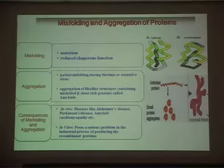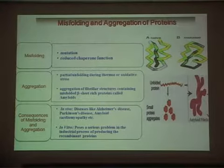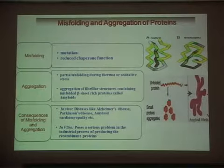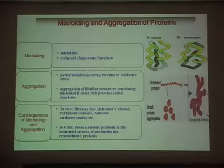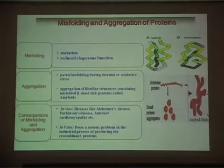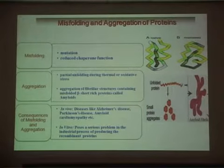The consequences of misfolding and aggregation in vivo include neurodegenerative diseases like Alzheimer's and Parkinson's disease. Similarly, in vitro, the large-scale production of recombinant proteins is a very important industrial process, and the most important problem is misfolding and aggregation. So there must be some attempts to prevent misfolding and aggregation in vitro systems, because the biotechnological industry's protein production depends on how properly the protein is folded.